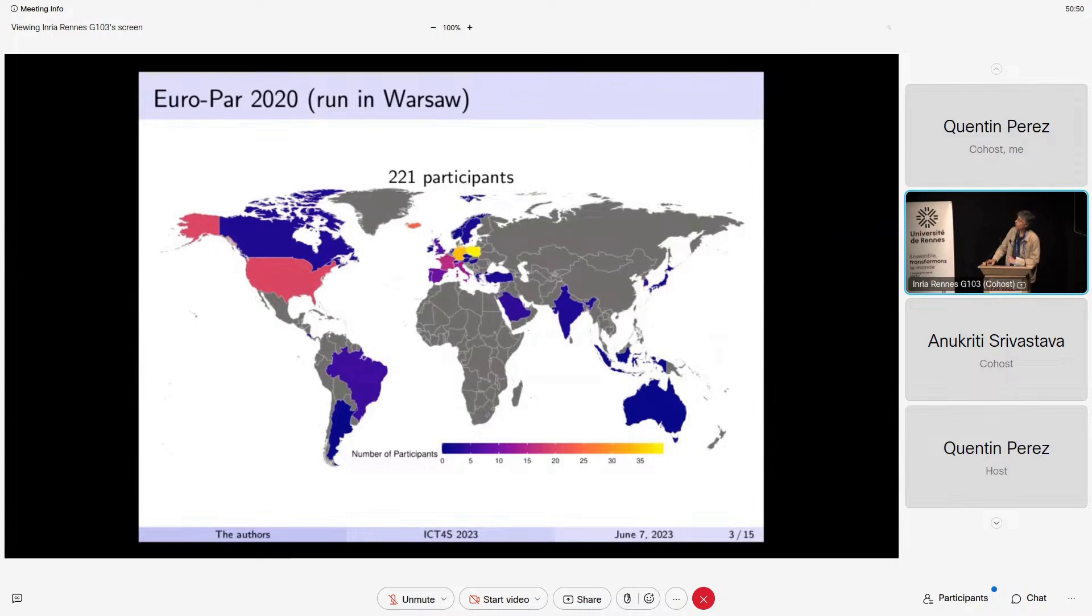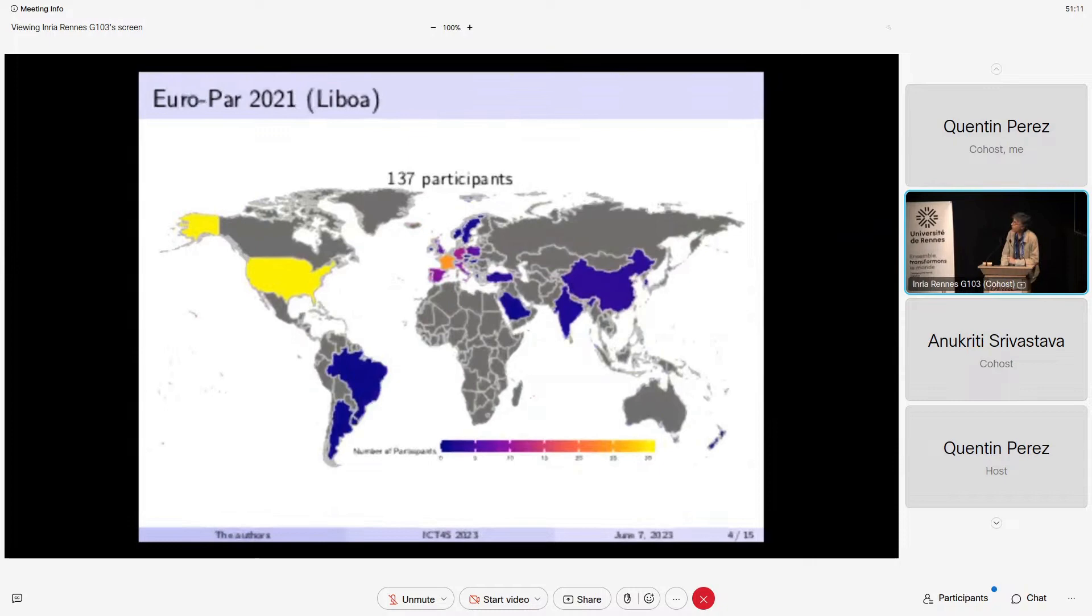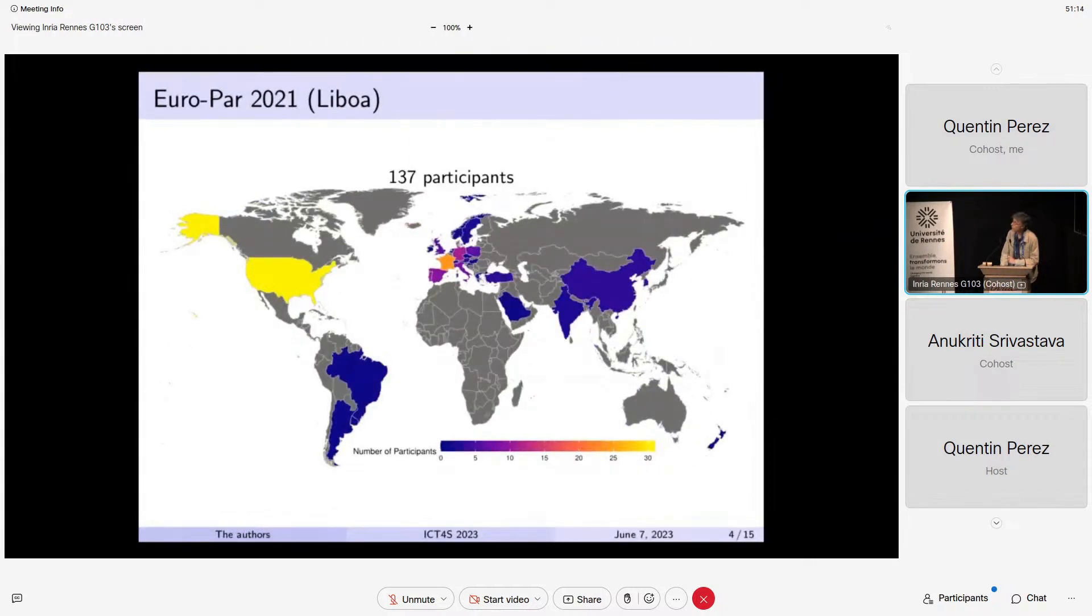In 2020, we were in Warsaw. And you can see here the region of the participants of the conference. And mainly they were coming from Poland, as you can see here, and Germany, even if it was virtual. So there are some people who came physically, probably. And in 2021, in Lisbon, then the distribution was a bit different. So many people from France and also from the US. And this is a different view of the people who attended.